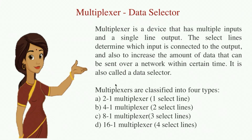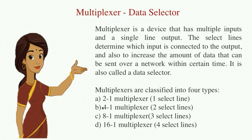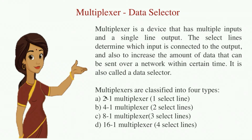There are a lot of applications of multiplexers — it helps in sending a lot of data within a limited time duration. There are different types of multiplexers: two-to-one, four-to-one, eight-to-one, and sixteen-to-one. The number of select lines is determined by 2 to the power n — so a two-to-one multiplexer has one select line, four-to-one has two select lines, eight-to-one has three select lines, and so on.